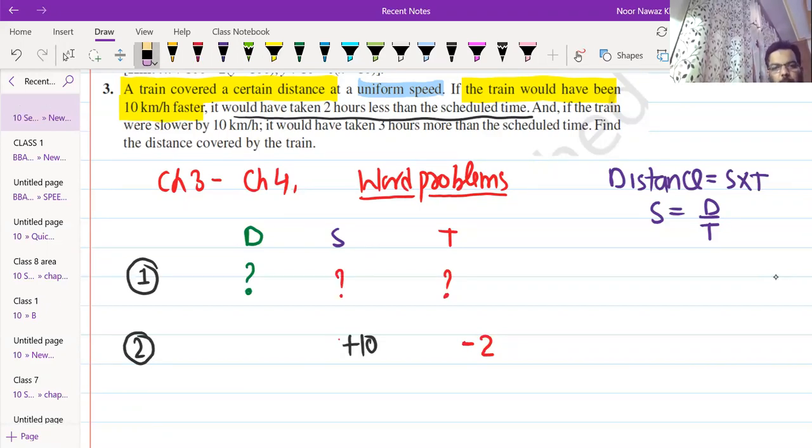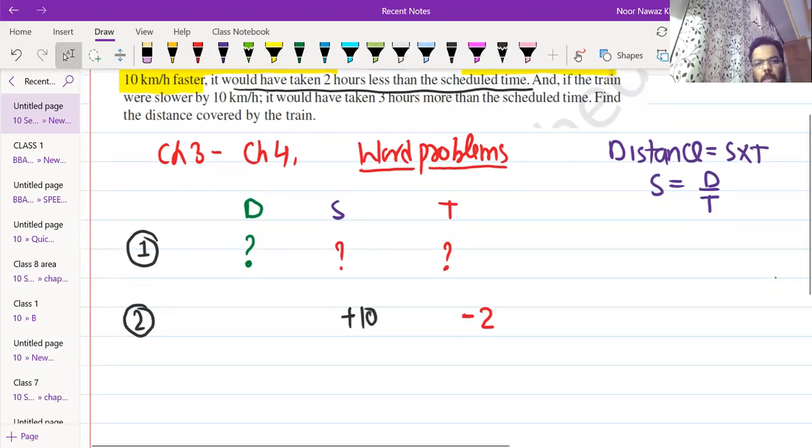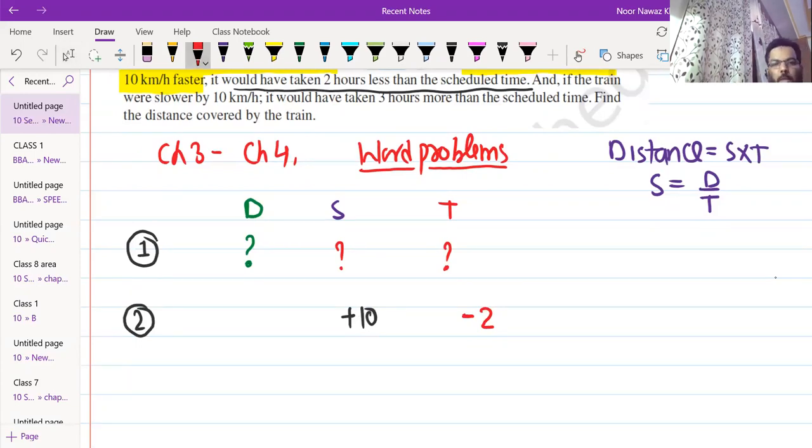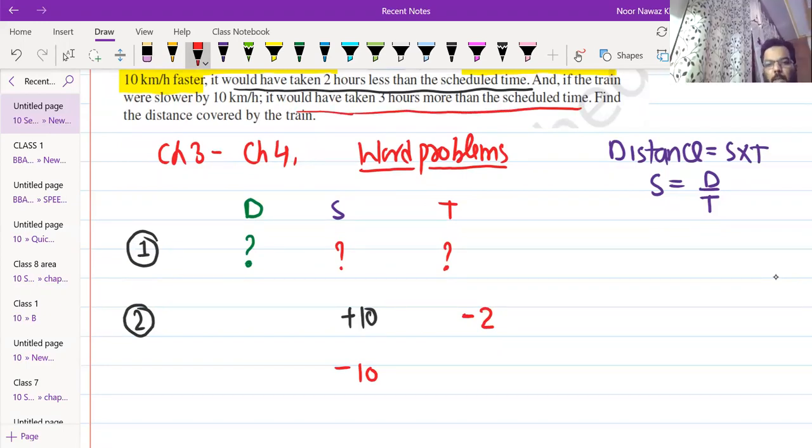I have a question mark. Whatever it is, it will be plus 10. We will have time minus two. But there is another case. If the train was 10 km per hour slower, if speed is slowed, then time will be three hours more. Obviously when you are slow, time will be more.